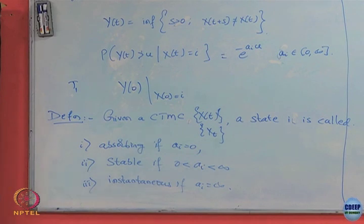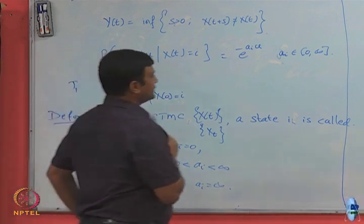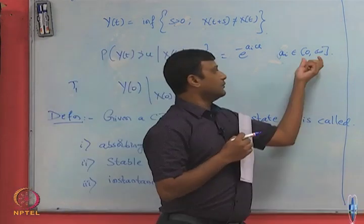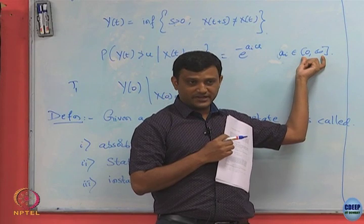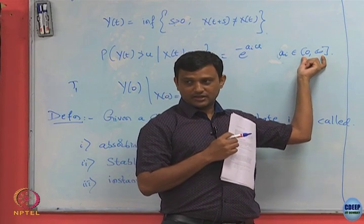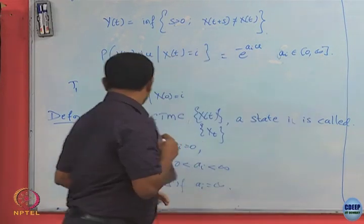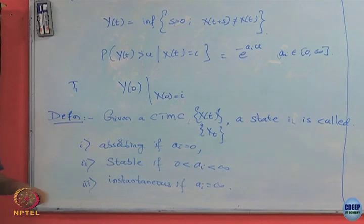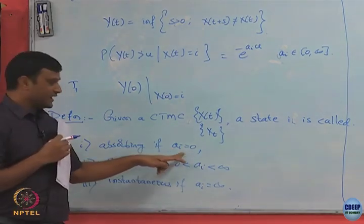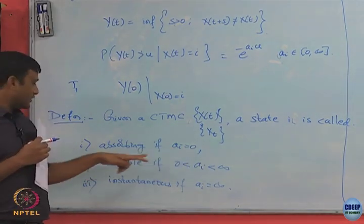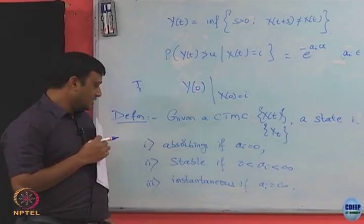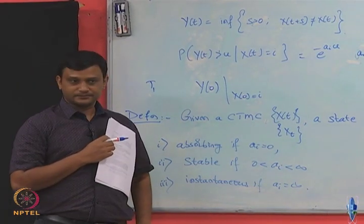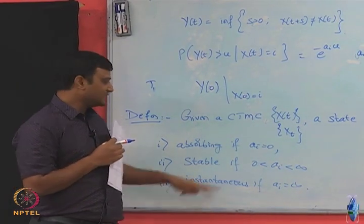States are classified into two boundary cases. If ai takes the value 0, we call the state absorbing. If ai equals infinity, we call it instantaneous. Now let us understand what each of these means.